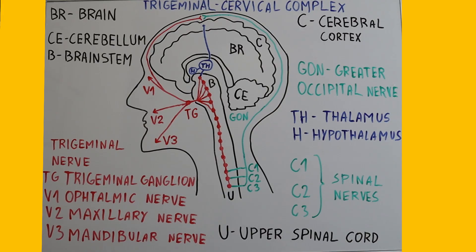The trigeminal nerve, also known as cranial nerve V, is the main sensory nerve of the face and also controls some chewing muscles. The ophthalmic nerve provides sensation to the forehead, scalp, upper eyelids and the nose. The maxillary nerve covers the lower eyelid, cheeks, upper lip, upper teeth and the palate. The mandibular nerve, which has both sensory and motor functions, covers the lower lip, chin, lower teeth and parts of the tongue, and also controls the muscles of mastication.